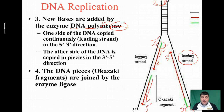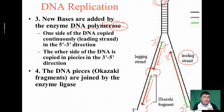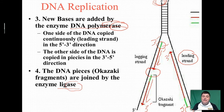The final step is we want to join those fragments together, because we don't want one complete strand of DNA and one strand which contains fragments. In order to join those fragments, we're going to use an enzyme called ligase. It's an enzyme because it ends in -ase, and it's named for what it does — it pieces things together.